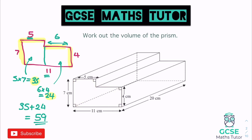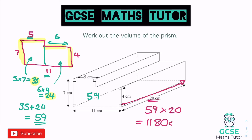So the area of that cross section is 59. Just like before, once we've got the area of the cross section — in this case the L-shape — we multiply it by the depth. The distance it goes back through the shape is 20 centimetres. So 59 times 20: 2 times 59 is 118, add on the zero, that is 1,180. Not forgetting your units — this was in centimetres, so our volume is 1,180 centimetres cubed.